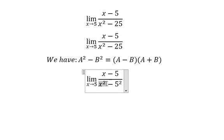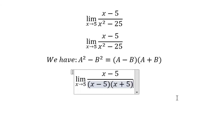So we can rewrite x squared minus 5 squared as (x minus 5)(x plus 5). Now we simplify by canceling x minus 5 from the numerator and denominator, giving us 1 over (x plus 5).